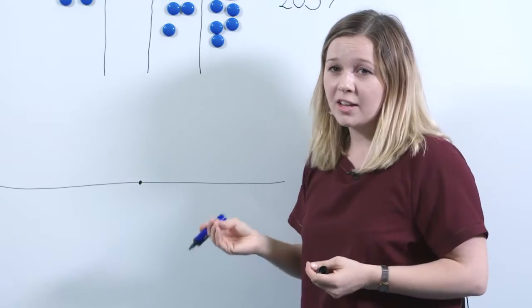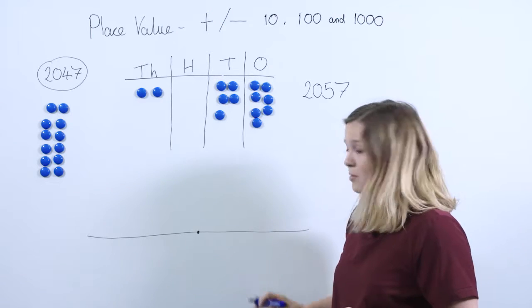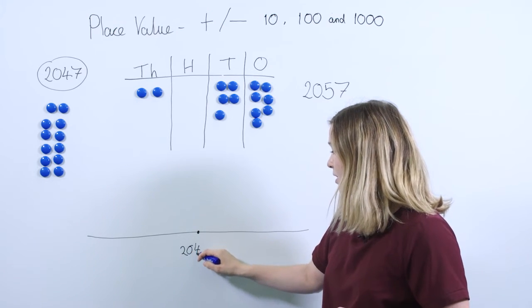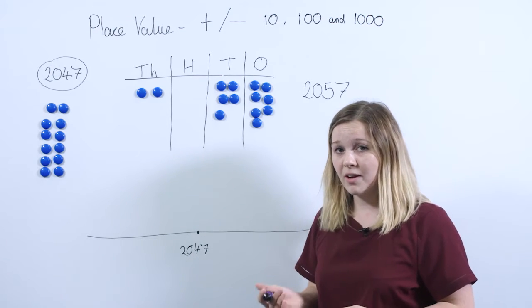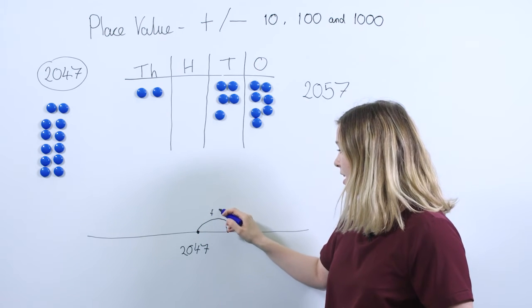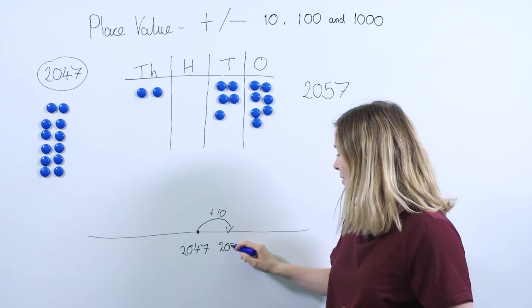A really good thing to do whilst you're looking at a place value chart is also look at a number line. So here I've got a blank number line. I'm going to place 2047 here, and we're going to show pupils what happens when you add 10. I'm simply going to do one jump to add 10, and our number will change to 2057.